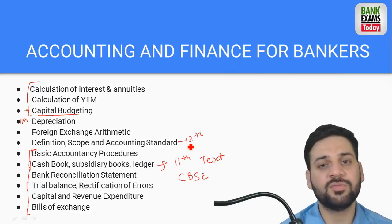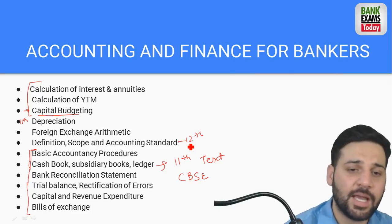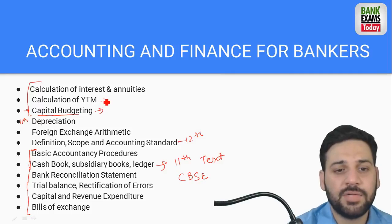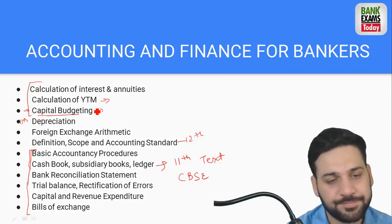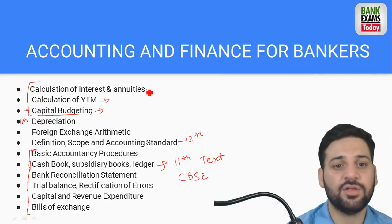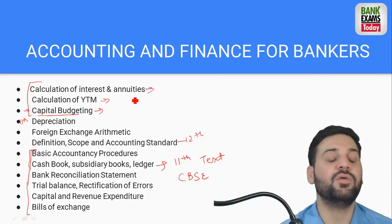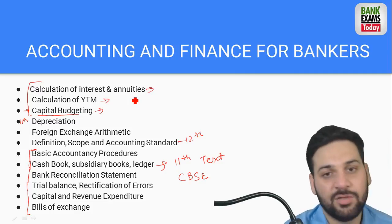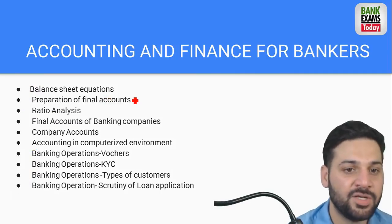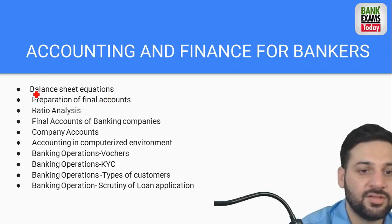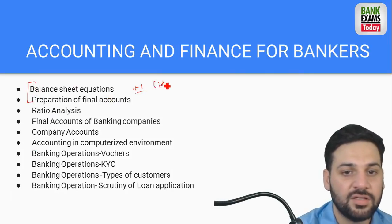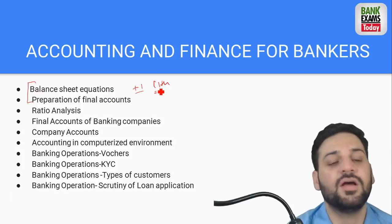Capital budgeting, YTM (Yield to Maturity), and calculation of interest are graduation-level topics you may not have studied. Balance sheet equations are from Class 11 level. Ratio analysis is also a very easy topic. Final accounts of banking companies and company accounts — don't go too in-depth at all.